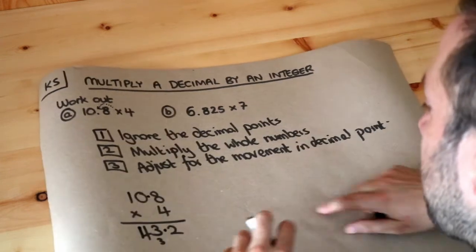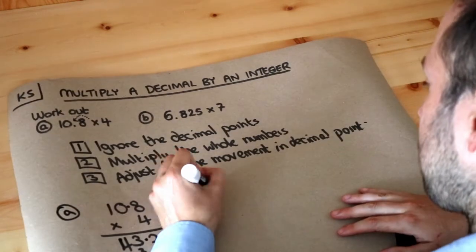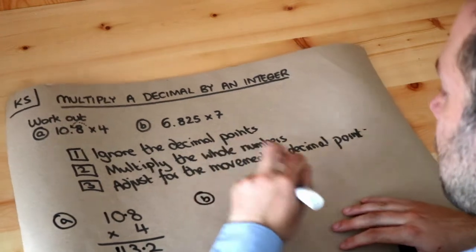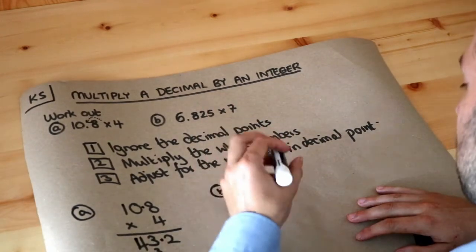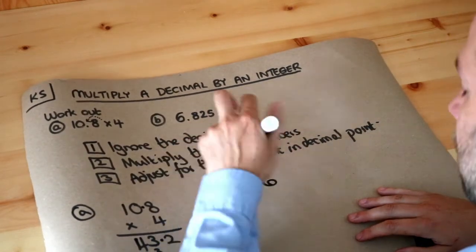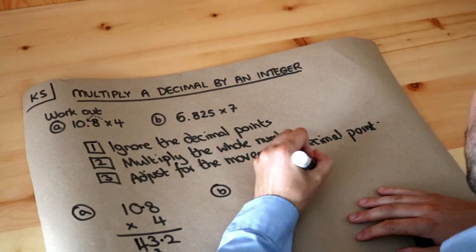Let's do that for the second one: 6.825 times 7. We ignore the decimal point first, so we treat it as 6825 times 7.